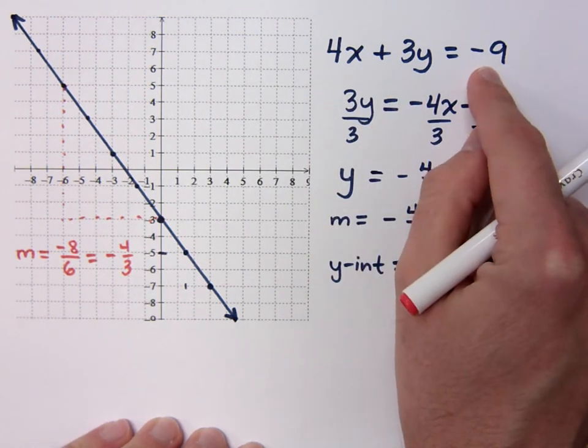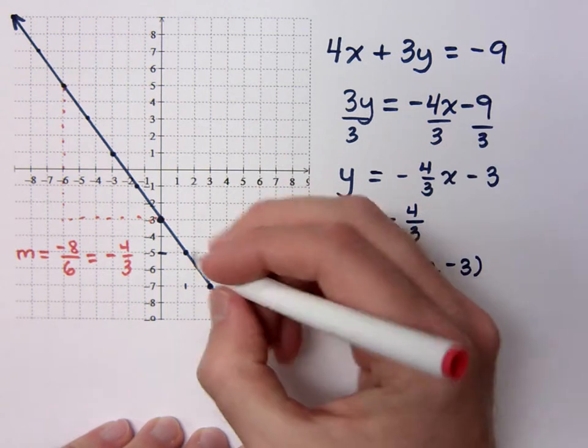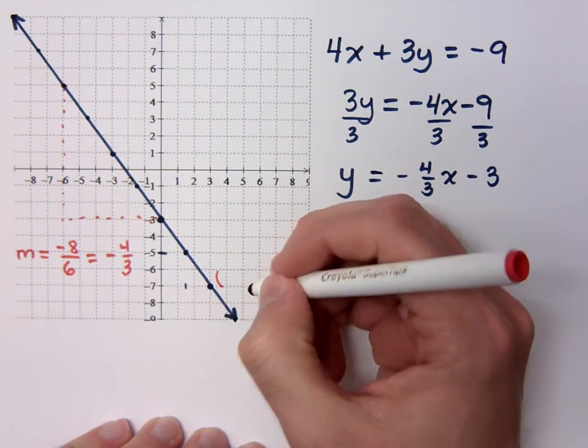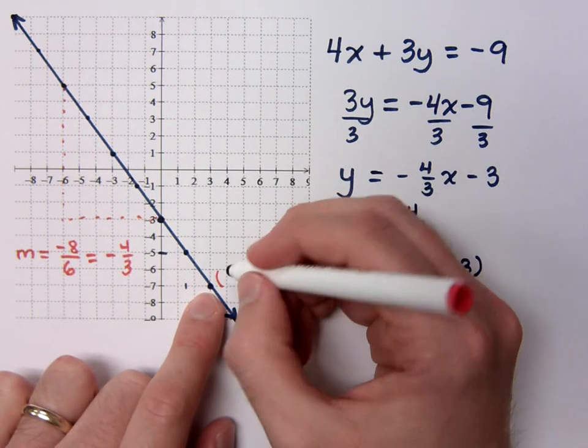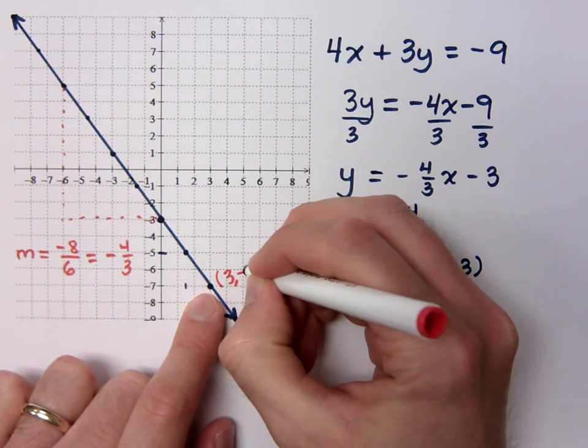It's really easy, especially when we have something that is in standard form. What are the coordinates for this point? Three, negative seven. It is. We get three, negative seven.